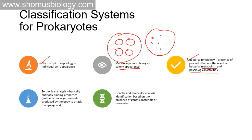Then there are serological analyses, where antibody binding properties are tested. An antibody is a large protein molecule that is specific to attaching with an antigen — perhaps a surface protein or surface component of a bacterium. This antigen-antibody interaction is so specific that it gives us important information about which antibody binds to which antigen, telling us about the antigenic properties of the bacterium.